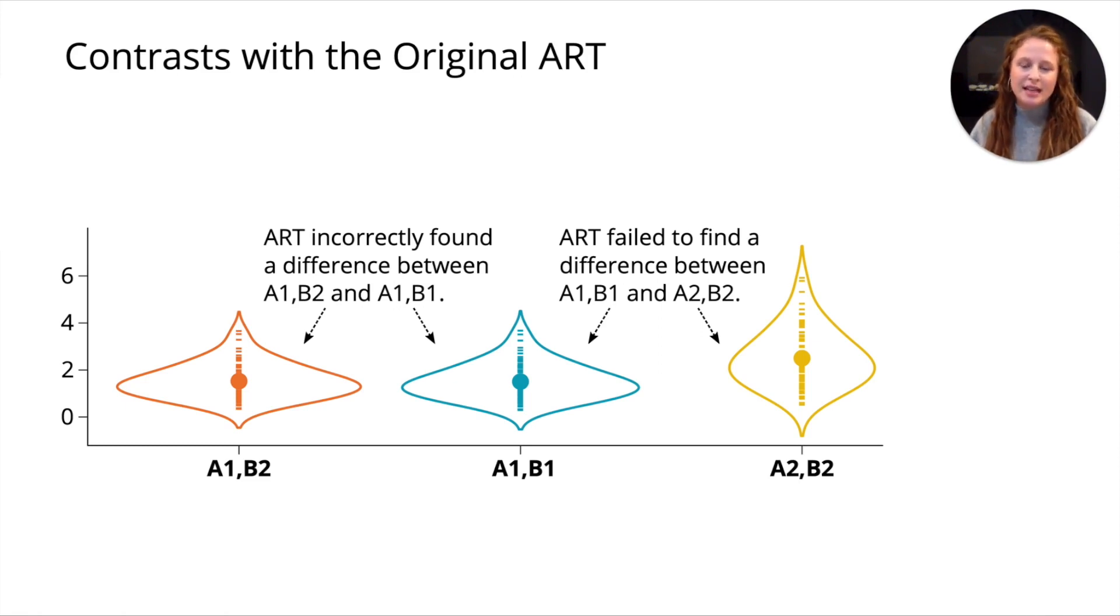We created an example that we use throughout our paper, which we call our running example. We used the ART to conduct contrasts between combinations of levels of multiple factors. You can see on the left that ART incorrectly found a difference between A1B2 and A1B1. From the figure, it's very clear that there isn't a difference. And then on the right, ART failed to find a difference between A1B1 and A2B2. Again, from the figure, we can see that there is a significant difference.